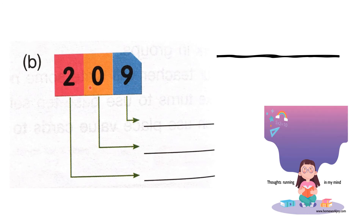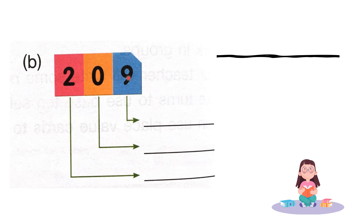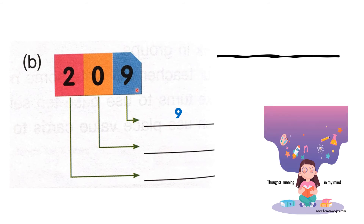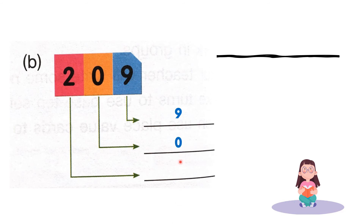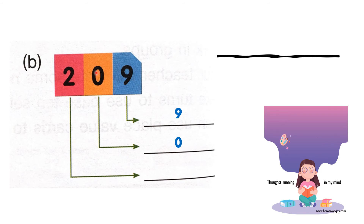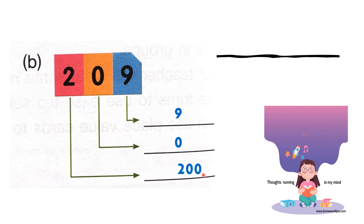Next: 209. The 1s place is 9. The 10s place is 0. And 2 is in the 100s place. What is the value of 9? It's the same — 9, because it is in 1s. The value of 0 is always 0. Students, always remember: if the digit is 0, the value is 0, in any place. In the hundreds place, number 2 — the value is 200.